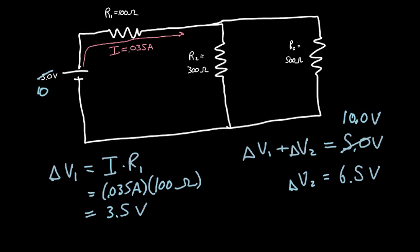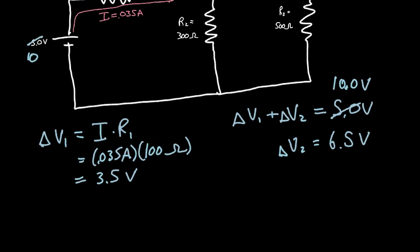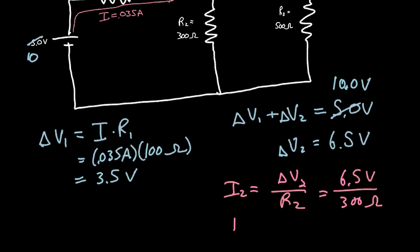And now for R2 we know everything except the current through R2. So we can set that up again using Ohm's law as I2 equals delta V2 over R2. So that's 6.5 volts divided by 300 ohms. And so I2 equals 0.0217 amps.